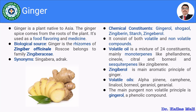Ginger is a plant native to Asia, and the spice comes from the roots of the plant, which are called rhizomes. It is used as a food flavoring and in medicine to manage, treat, and prevent certain diseases. The biological source of ginger: it is obtained from the rhizomes of Zingiber officinale, belonging to family Zingiberaceae.